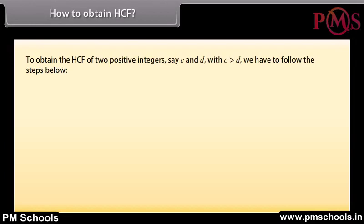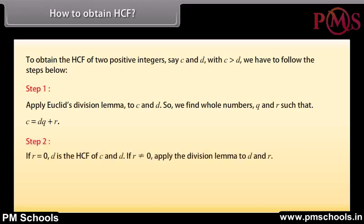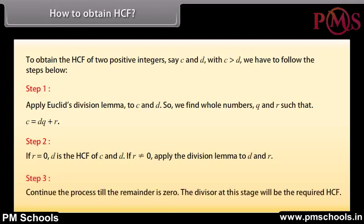How to obtain HCF: To obtain the HCF of two positive integers C and D, with C greater than D, follow these steps. Step 1: Apply Euclid's division lemma to C and D to find whole numbers Q and R such that C equals DQ plus R. Step 2: If R equals 0, D is the HCF. If R is not equal to 0, apply the division lemma to D and R. Step 3: Continue the process till the remainder is 0. The divisor at this stage will be the required HCF.